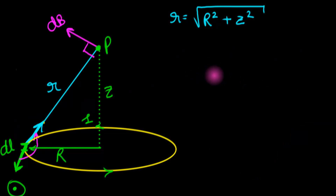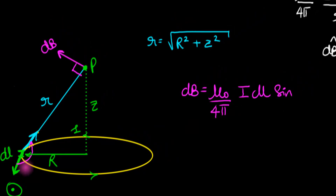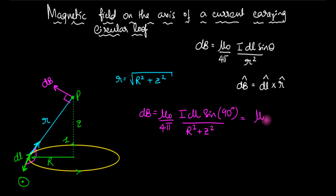The strength of that is going to be mu_0 divided by 4pi times i·dl times sin(theta), where theta is the angle between the dl vector and the r vector. Now, dl is running out of the screen and r lies in the screen. Any vector that comes out of the screen is perpendicular to any vector that lies in the screen, so theta is 90 degrees. That gives us mu_0·i·dl divided by 4pi times (R² + z²).